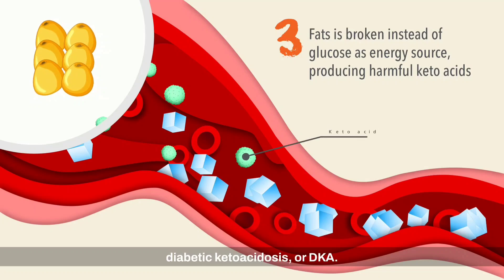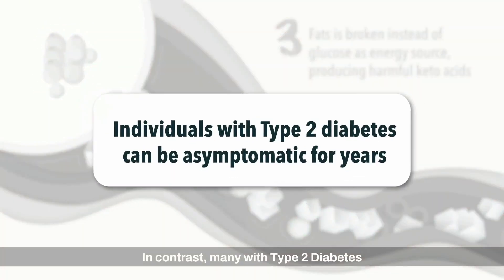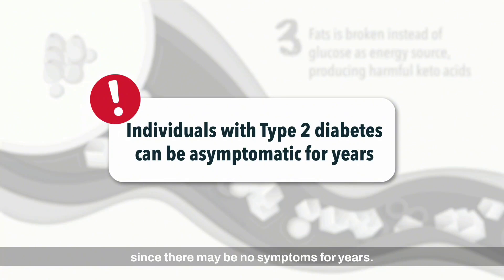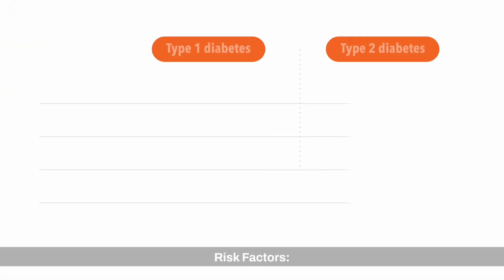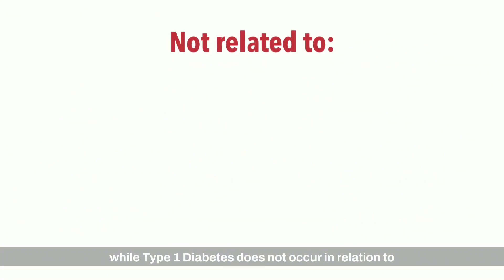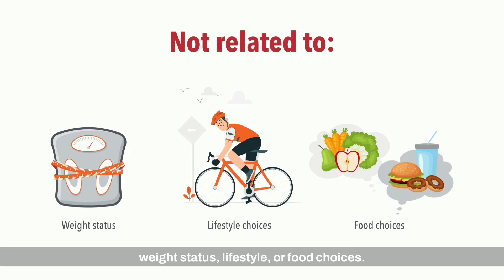This quickly leads to high glucose levels and a buildup of blood acid levels, leading to an acute presentation with diabetic ketoacidosis, or DKA. In contrast, many with type 2 diabetes may not know they have it, since there may be no symptoms for years. In terms of risk factors, insulin resistance in type 2 diabetes is usually related to being overweight or obese, while type 1 diabetes does not occur in relation to weight status, lifestyle, or food choices.